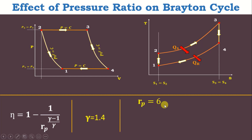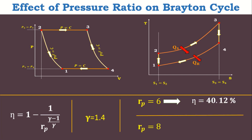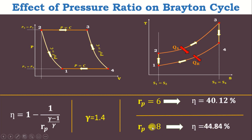Let's take the gas index as constant, i.e., gamma = 1.4. When pressure ratio is 6, the efficiency becomes 40.12%. When we increase pressure ratio from 6 to 8, the efficiency becomes 44.84%. From this we can conclude that when we increase the pressure ratio of Brayton cycle, the efficiency of Brayton cycle increases, and vice versa.